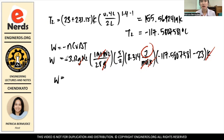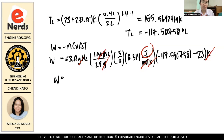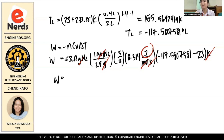The work is negative because the work is done by the system — the system expands, so work decreases. For compression, on the other hand, work is positive because it is done on the system by the surroundings, so the work energy goes into the system.